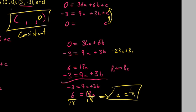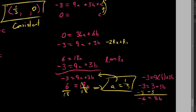Now that we know a = 1/3 and c = 0, we can back-solve for b. Plugging into the equation: -3 = 9(1/3) + 3b, which is -3 = 3 + 3b. Solving for b: -3 - 3 = 3b, so -6 = 3b, and b = -2.